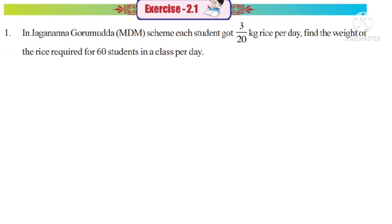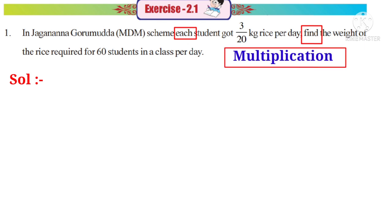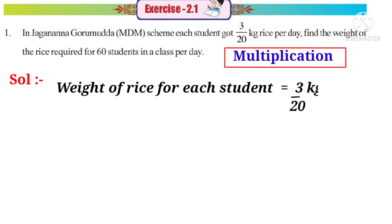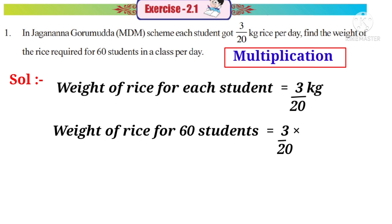Now let us do exercise 2.1. Problem 1: In the Jagannana Gurmudda scheme, each student got 3/20 kilograms of rice per day. Find the weight of rice required for 60 students in a class per day. The word 'each' indicates multiplication. Weight for each student = 3/20 kg. Weight for 60 students = 3/20 × 60. On simplification by 20, that is 3 × 3 = 9 kilograms.